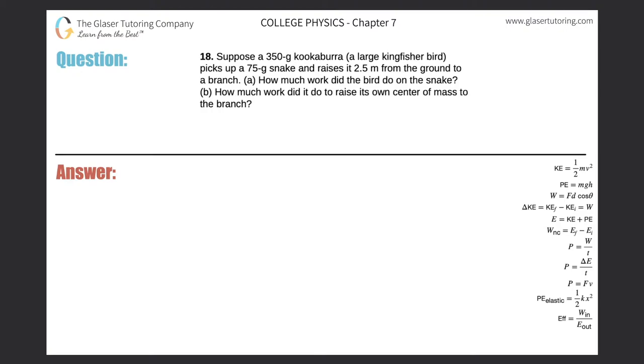Number 18, suppose a 350 gram kookaburra, a large kingfisher bird, picks up a 75 gram snake and raises it 2.5 meters from the ground to a branch. How much work did the bird do on the snake?